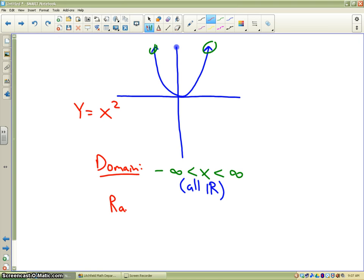However, the range is based on the vertex. The range is based on the vertex, which is the minimum or the maximum value. If you notice, in this particular case for the parent function, the lowest the function gets is 0.